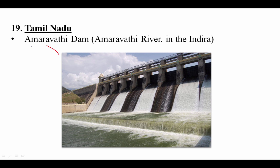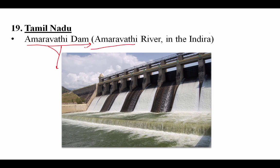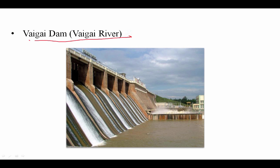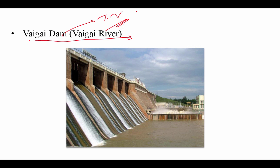From Tamil Nadu, three dams: First, Amaravati Dam on the Amaravati river. Second, Mettur Dam on the Kaveri river — the reservoir formed is called Stanley reservoir. Third, Vaigai Dam on the Vaigai river, which belongs to Tamil Nadu and not Kerala. So three dams from Tamil Nadu: Amaravati, Mettur, and Vaigai.